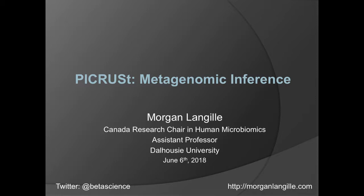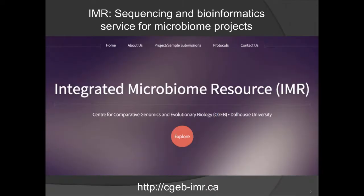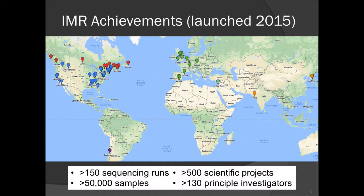I was originally supposed to talk again tomorrow, but since I'm not going to be here, Gavin, my student, is going to give that lecture. I'll just give a quick plug about a couple of things. I run a microbiome sequencing service out of our lab called the IMR, or the Integrated Microbiome Resource. We launched it in 2015, mostly to service local samples. We've now hit 50,000 samples across a large number of projects and investigators, mostly in North America, but also in Europe and around the world.